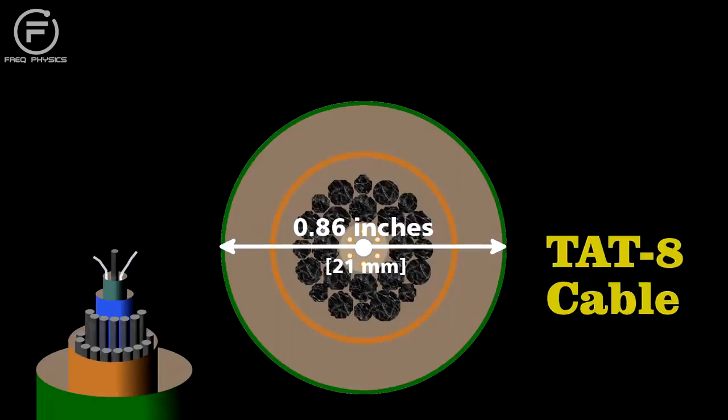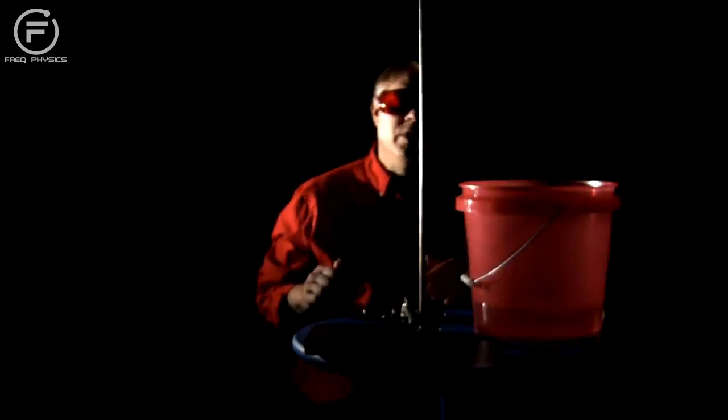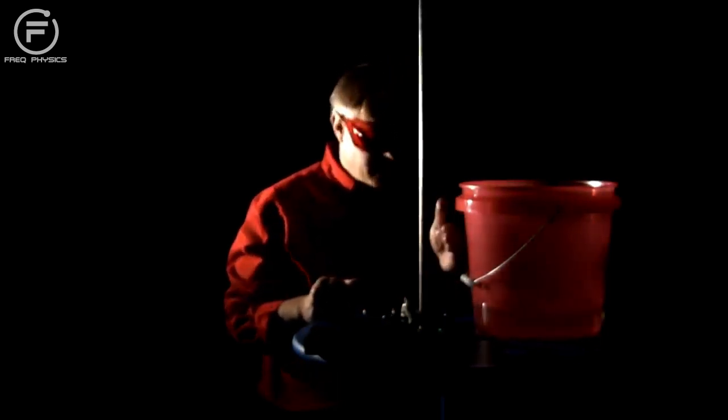The essence of how they send information through a fiber-optic cable is very simple. I could have a prearranged signal with someone at the other end. Perhaps we'll use Morse code, and I just block the laser so that the person at that end sees flashes that communicate a message.